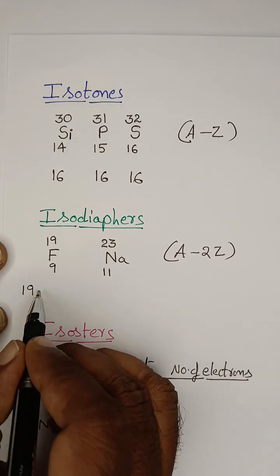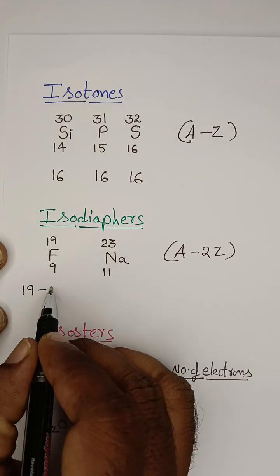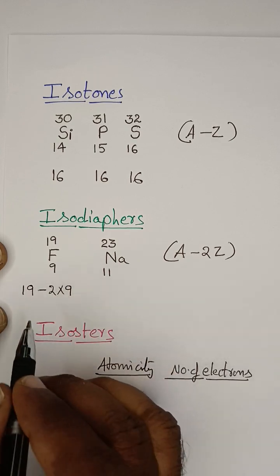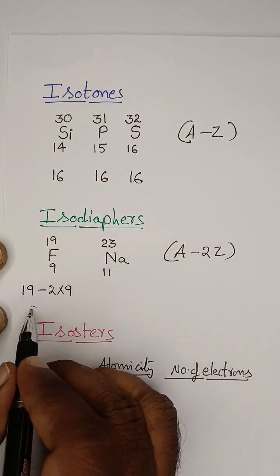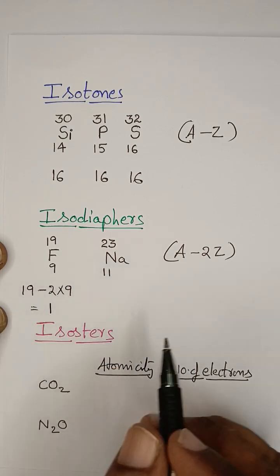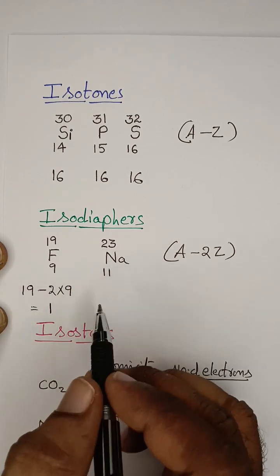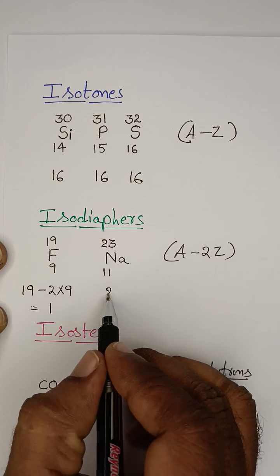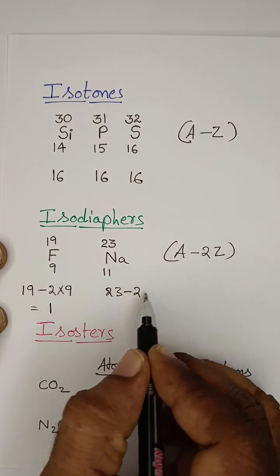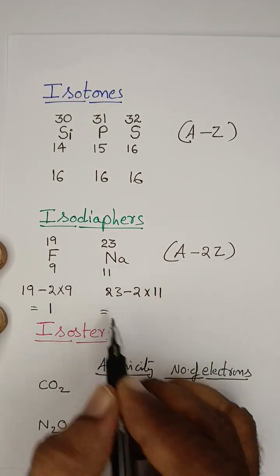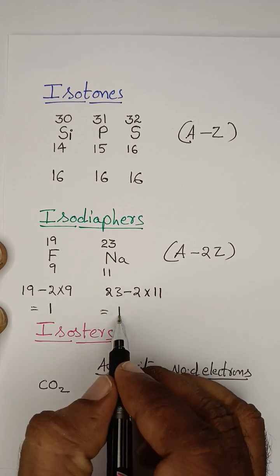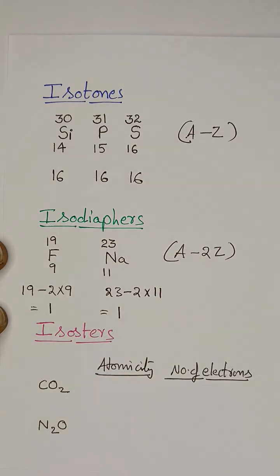For the first example: 19 minus 2 into 9, that is 19 minus 18, equals 1. For the second example: 23 minus 2 into 11, that equals 23 minus 22, equals 1. Both have the same isotopic number, so they are isodiaphores.